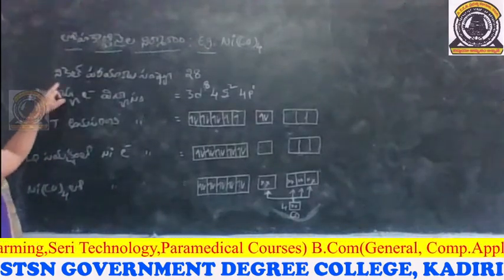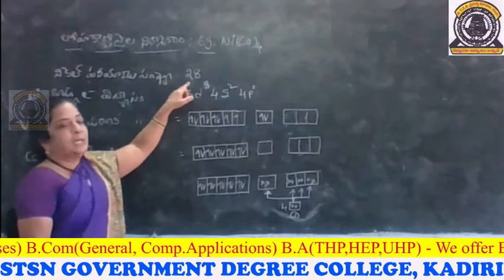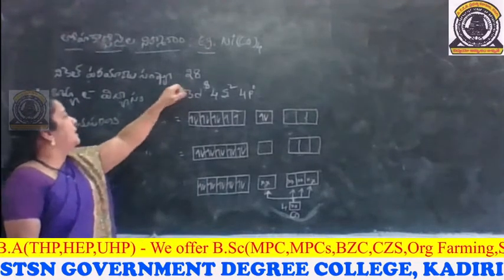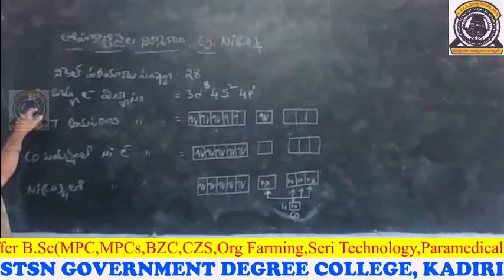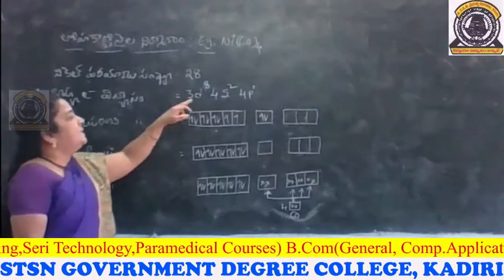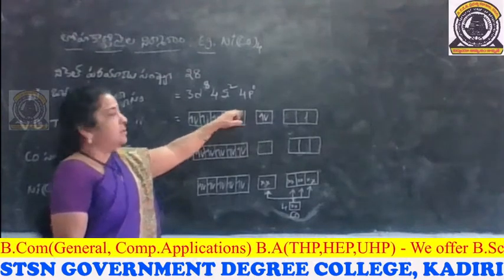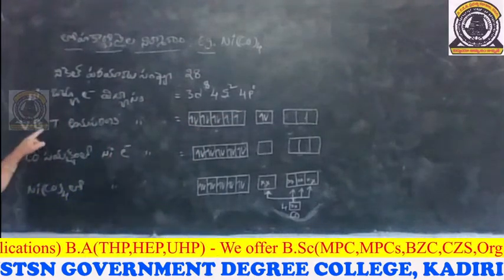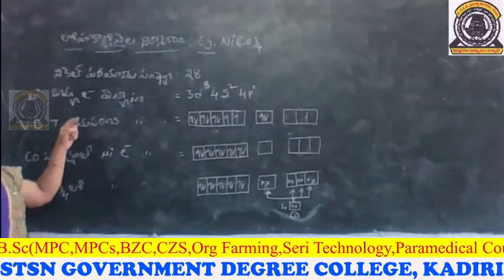The nickel atomic number is 28. Nickel's electron configuration is 3d⁸, 4s⁰ — wait, 4s². So if we balance the energy, we will use the low-energy carbon orbitals.